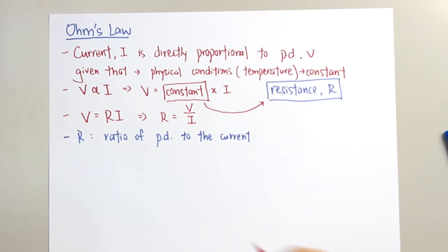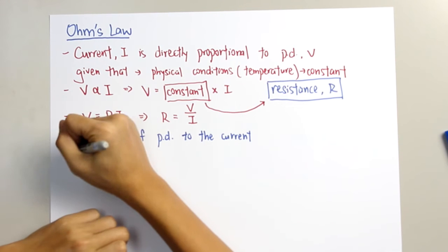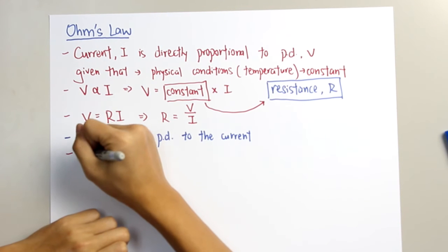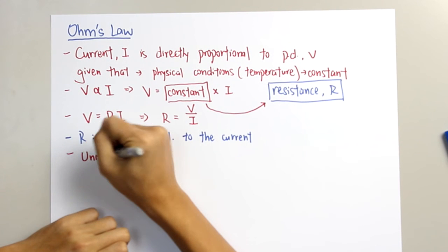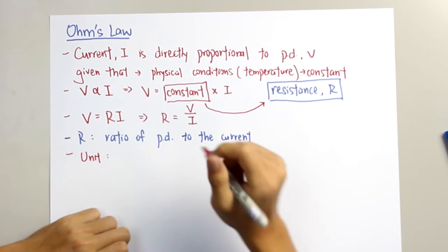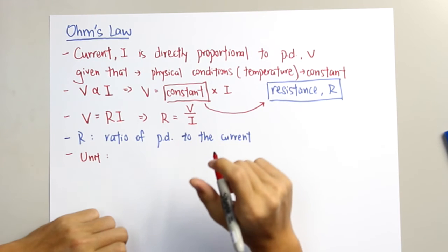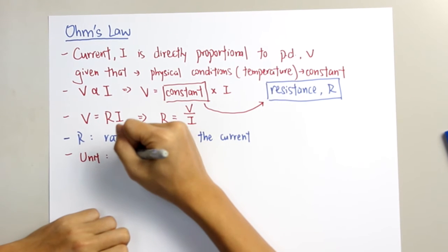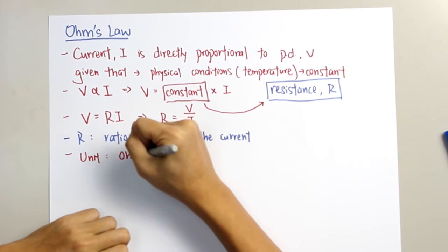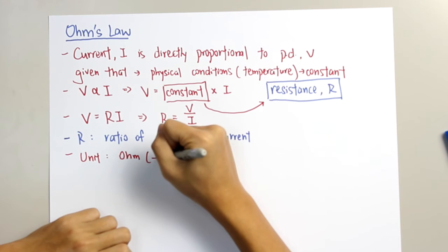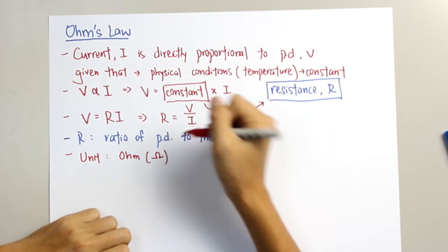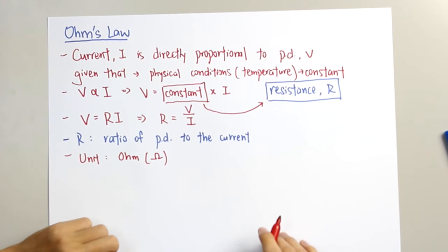The unit we use for resistance is called Ohm. And this is how the symbol looks like.